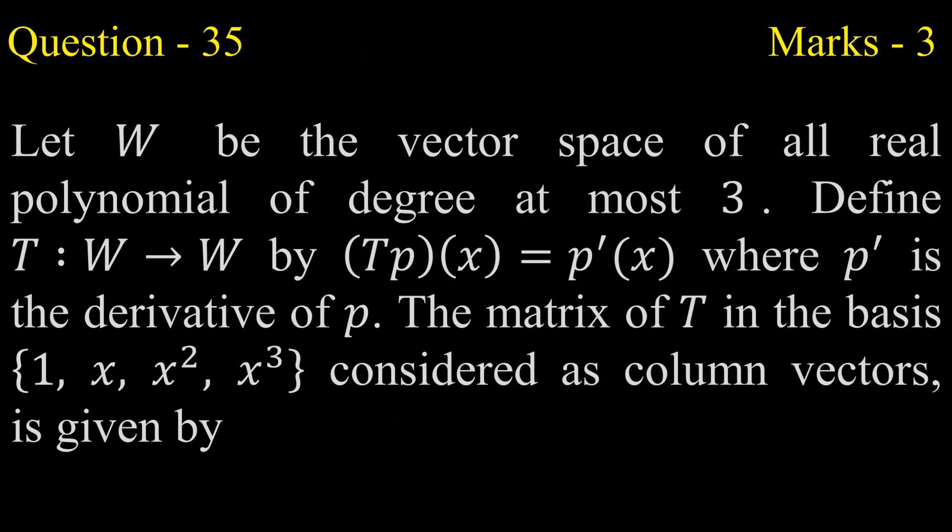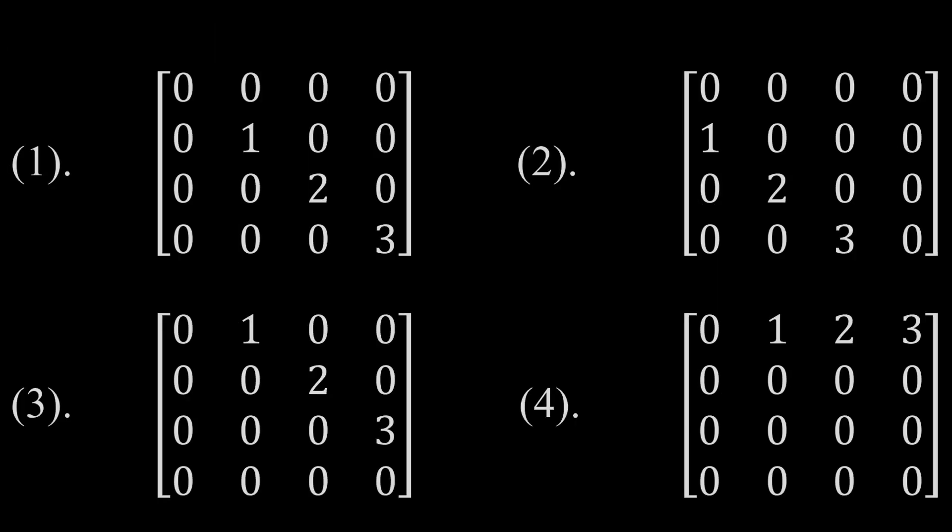The question is: let W be the vector space of all real polynomials of degree at most 3. Define a transformation T from W to W by T(p(x)) = p'(x), where p' is the derivative of p. The matrix of T in the basis {1, x, x², x³}, considered as column vectors, is given by Option 1: